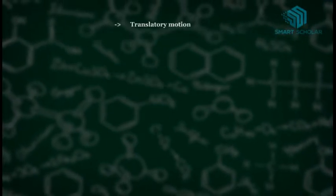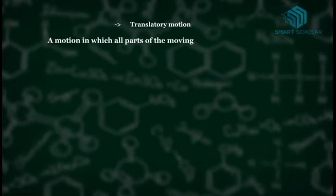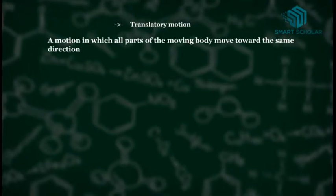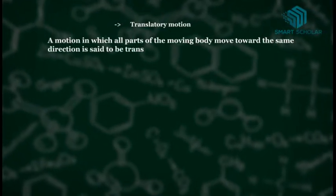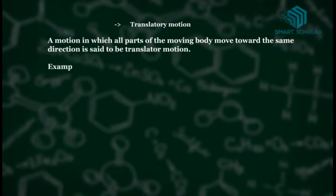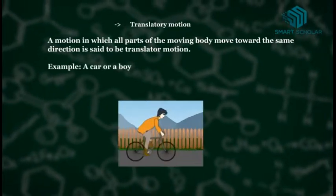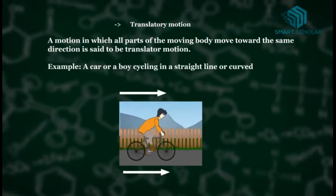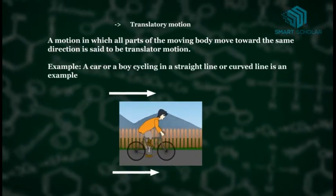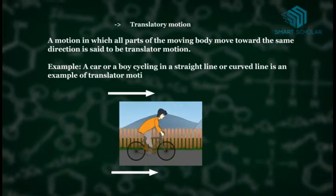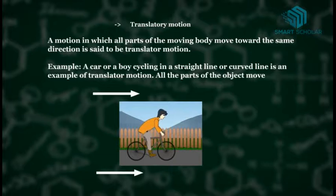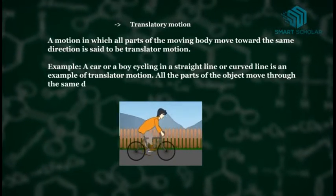First, let us learn about translatory motion. A motion in which all parts of the moving body move in the same direction is said to be translatory motion. For example, a car or a boy cycling in a straight line or curved line is an example of translatory motion. All the parts of the object move the same distance.